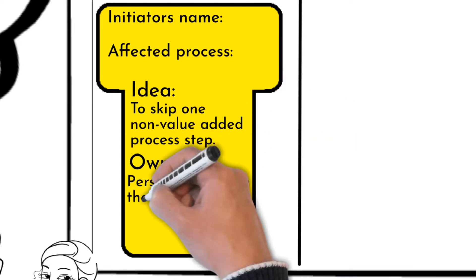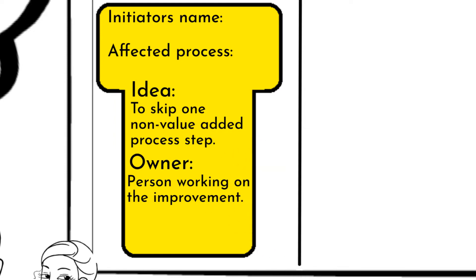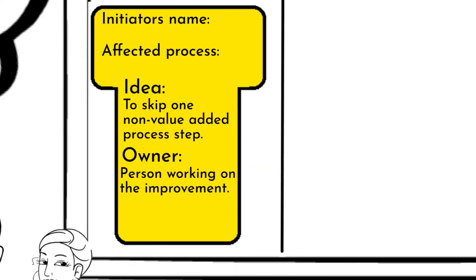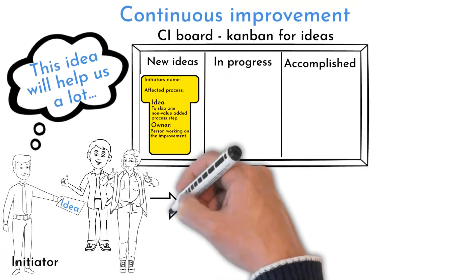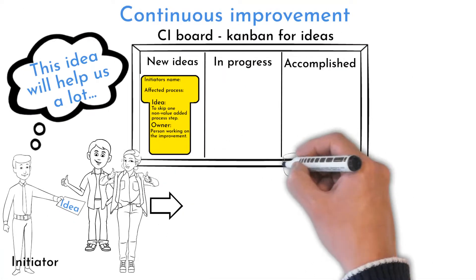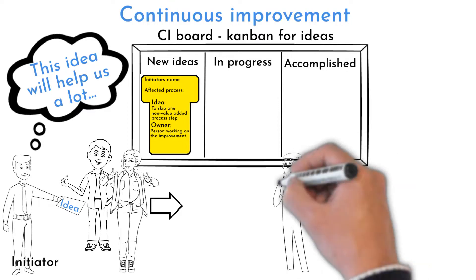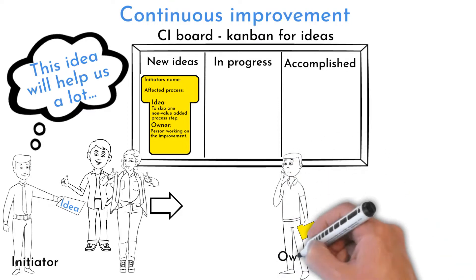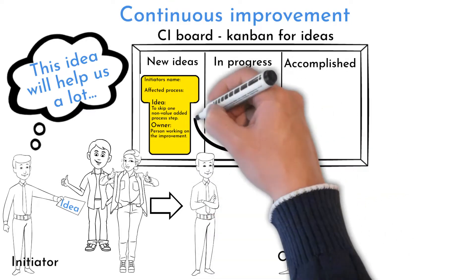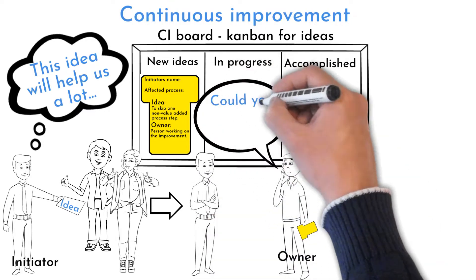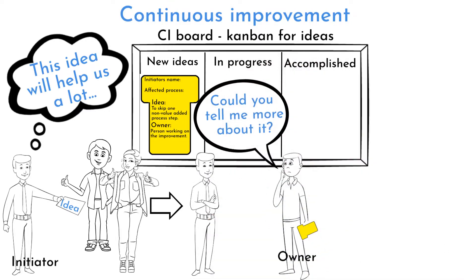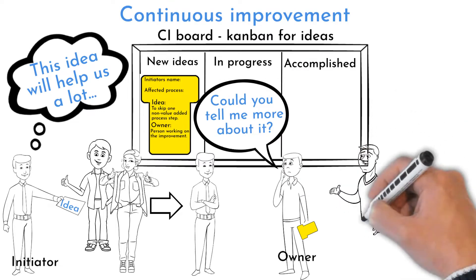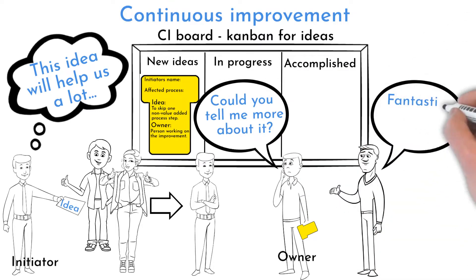The owner can be an engineer, maintenance person, production member, or the initiator himself. The initiator and owner agree on a solution and estimate a due date, following up until solution implementation. The solution can then be presented to supervision to be recognized.